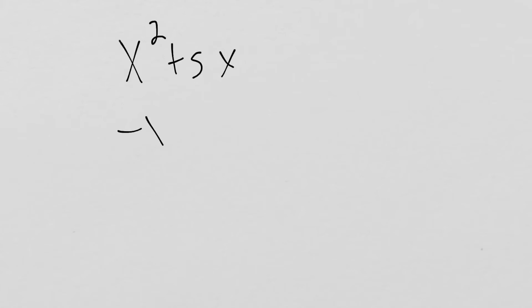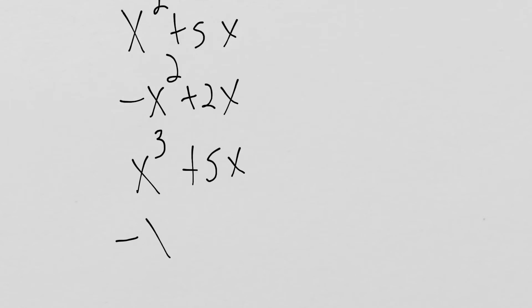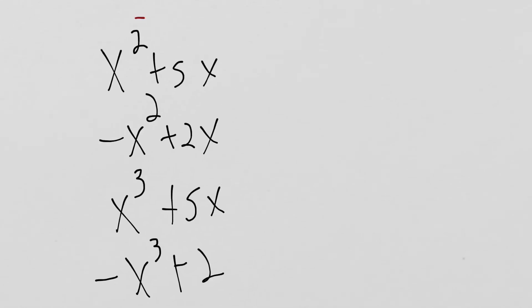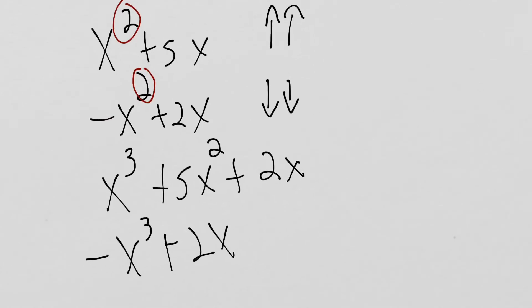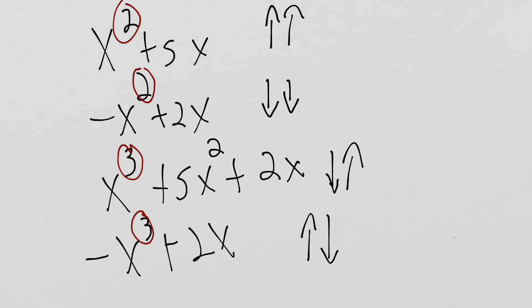The other thing we reviewed was polynomials and end behavior. We talked about the degree of a function — which is the biggest exponent within the polynomial — and what the graph might look like given that degree. These are both degree 2 polynomials. When we have an even degree, the end behavior is either up-up if there's a positive coefficient, or down-down if there's a negative coefficient. When the degree is odd, like x cubed, the behavior is either down-up for a positive odd or up-down for a negative odd.